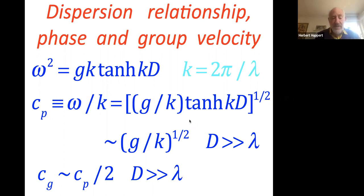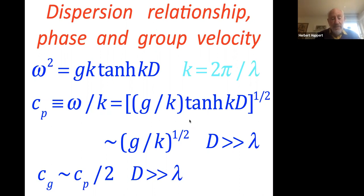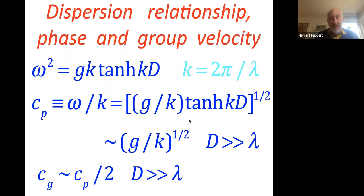There's another very important velocity: the group velocity, which is the rate at which energy propagates. It's equal to d-omega/dk. For deep waves, the group velocity is about half the phase velocity. So the velocity at which energy propagates is only half at which the phases travel.